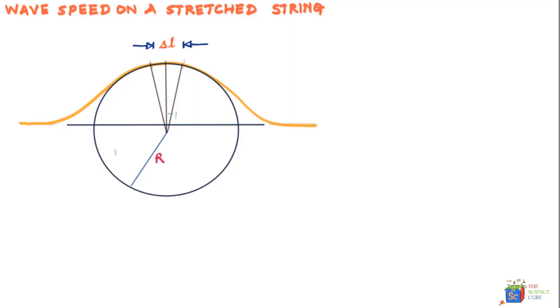The total angle subtended by Δl is 2θ at the center. You can observe that this arc, the small arc of length Δl, is part of the circle which has radius R, not the pulse itself. The velocity of this wave is v.